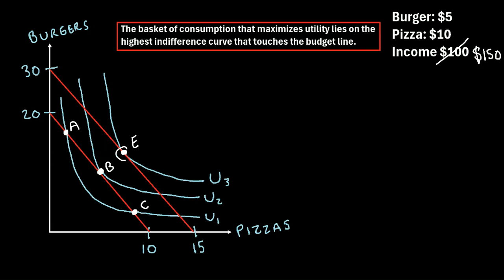Now there's a new point — let's call it point E — where our budget line is touching the indifference curve U3. So because our income increased, our budget line shifted outwards, and now we're able to reach point E on U3, which is the point that maximizes our utility. That was a quick explanation of the relationship between budget lines and indifference curves, along with the effects of changes in prices and changes in income.